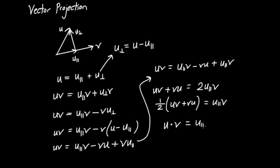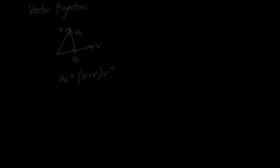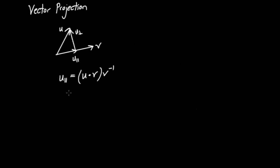So we have u dot v equals u parallel times v. To solve for u parallel, multiply both sides on the right by v inverse. Since v times v inverse equals 1, we get the formula: u parallel equals (u dot v) times v inverse. This is the geometric algebra version of the projection formula.